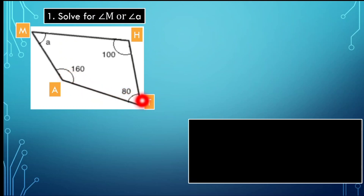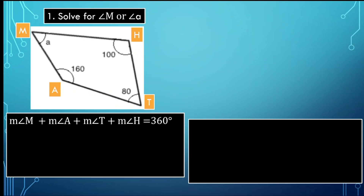The measure of angle T equals 80 degrees, and the measure of angle H equals 100 degrees. We'll go back to the definition for the interior angles of quadrilaterals: the measure of angle M plus the measure of angle A plus the measure of angle T plus the measure of angle H is equal to 360 degrees. Substituting the given: angle M plus 160 plus 80 plus 100 equals 360 degrees.